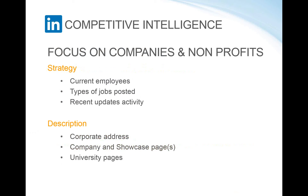In terms of company description, we get corporate address, company details, and showcase pages. For public companies that information is readily available through the SEC or directories, but for private companies LinkedIn really shines. If you're looking for a private company, you usually get a synopsis and affiliated pages with that company to gather more information about what they're doing at a particular division or subsidiary.